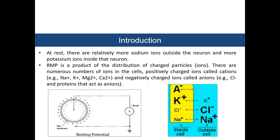RMP is a product of the distribution of charged particles — the ions. There are numerous ions in cells: positively charged cations such as sodium (Na+), potassium (K+), magnesium (Mg2+), and calcium (Ca2+); and negatively charged anions such as chloride (Cl-) and proteins acting as ions. The left figure shows the cell membrane with positive charge outside and negative charge inside connected to a voltage source of minus 70 mV, while the right figure shows the ions inside and outside the cell.